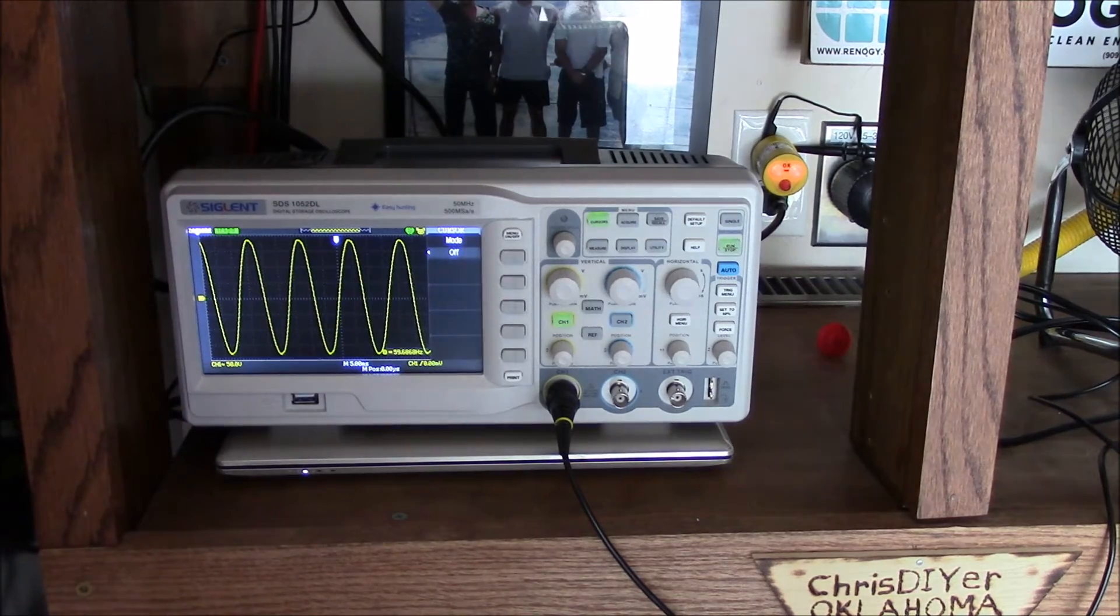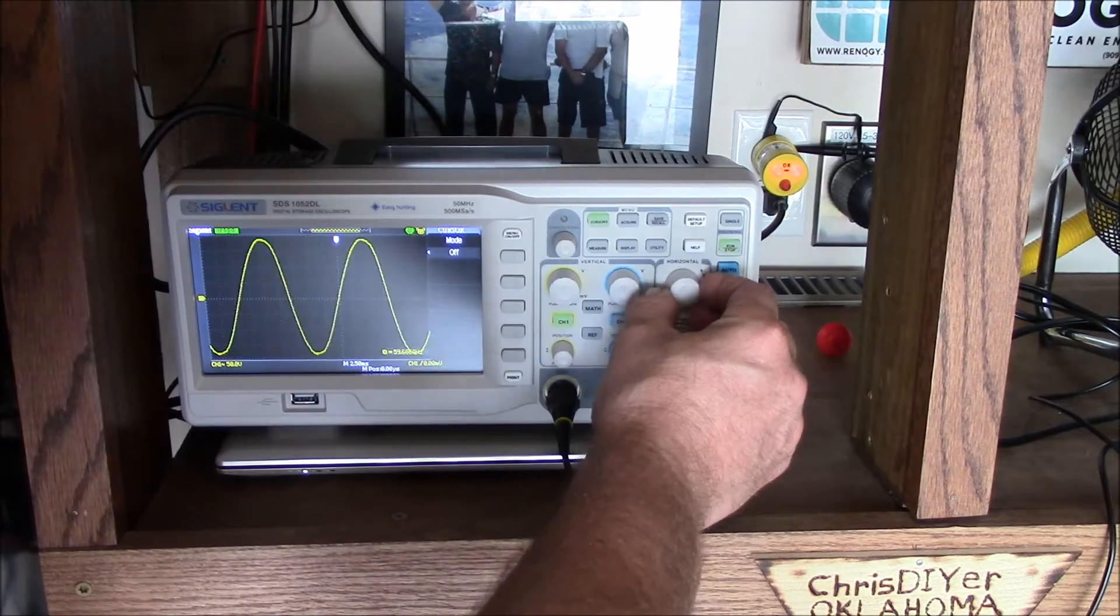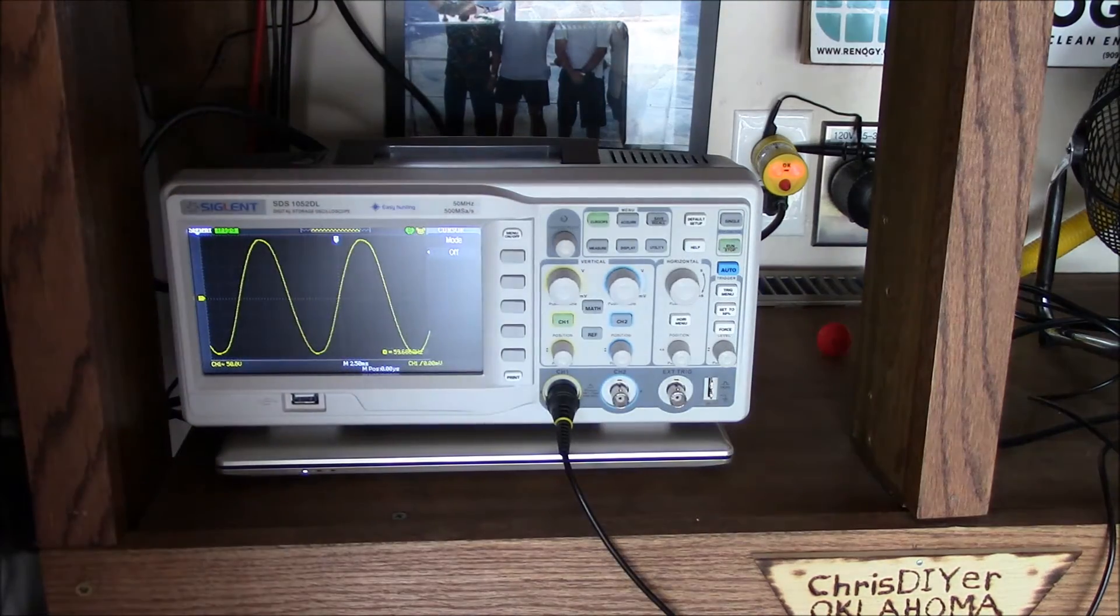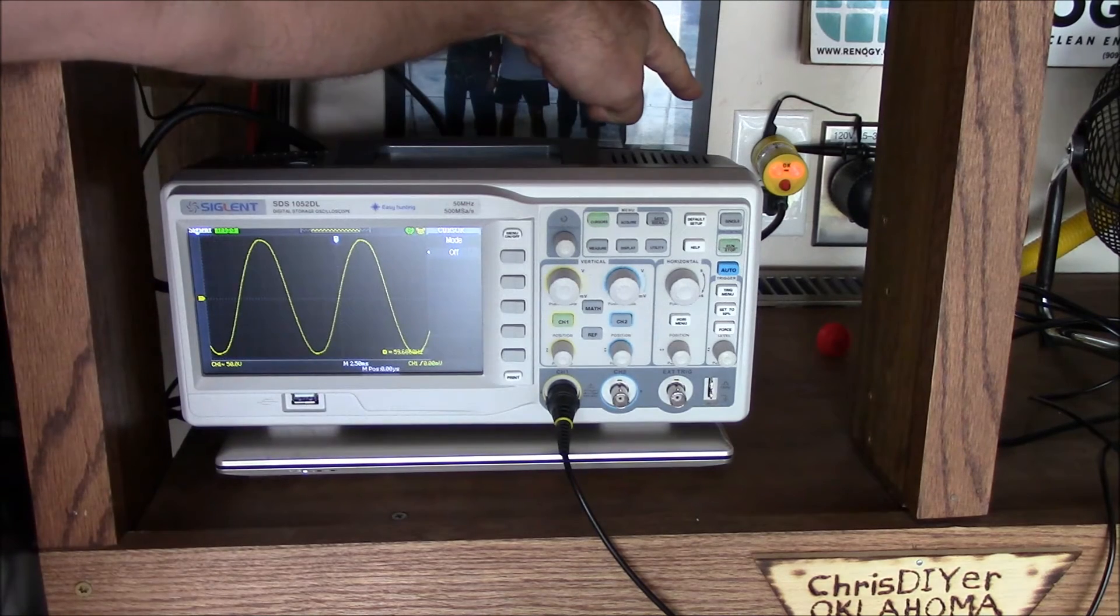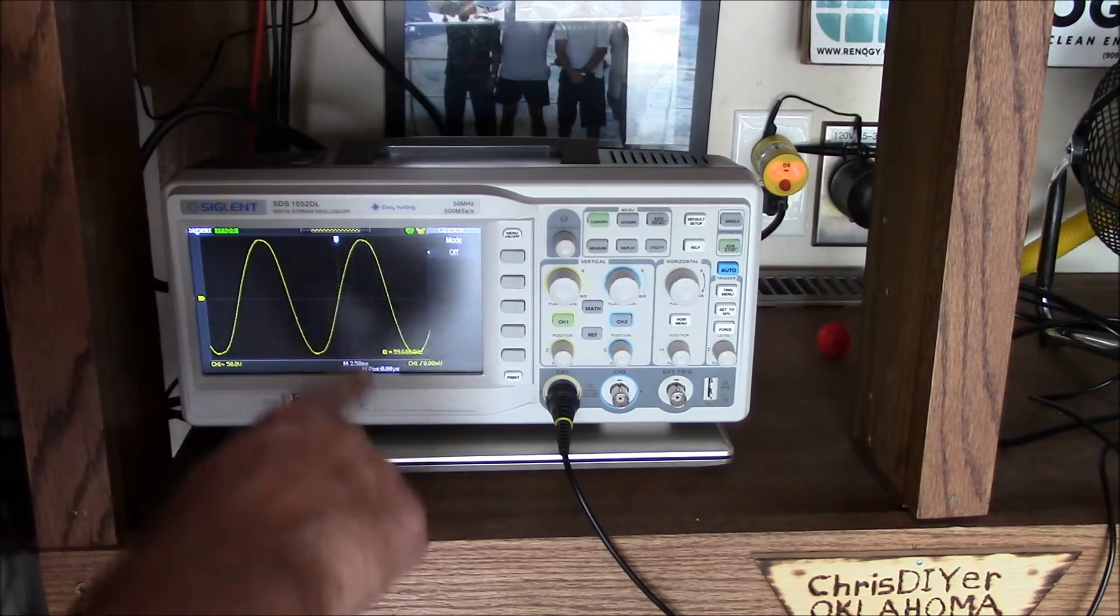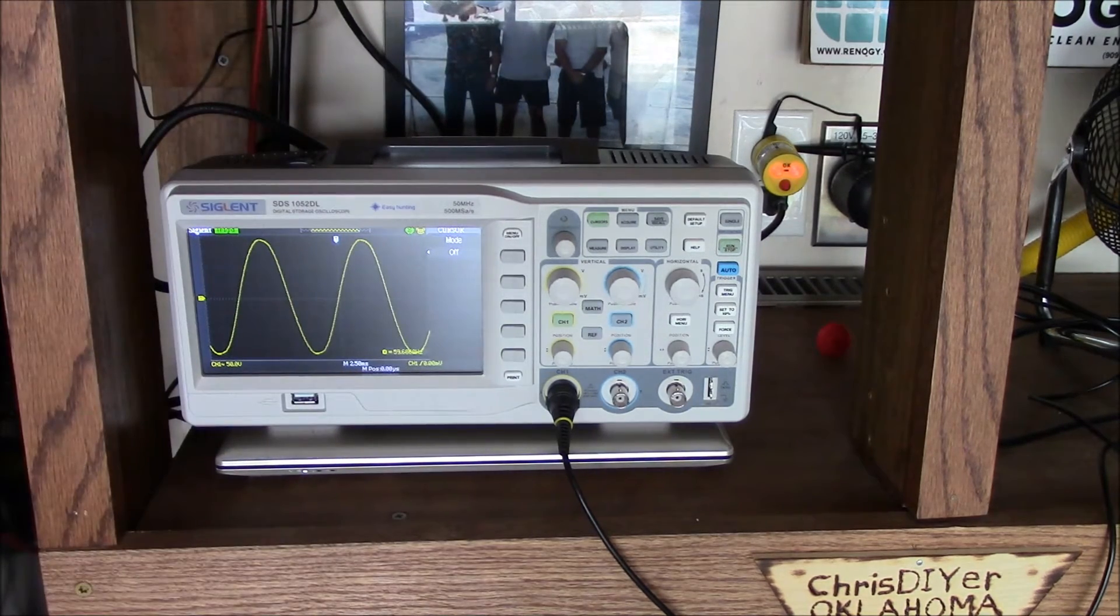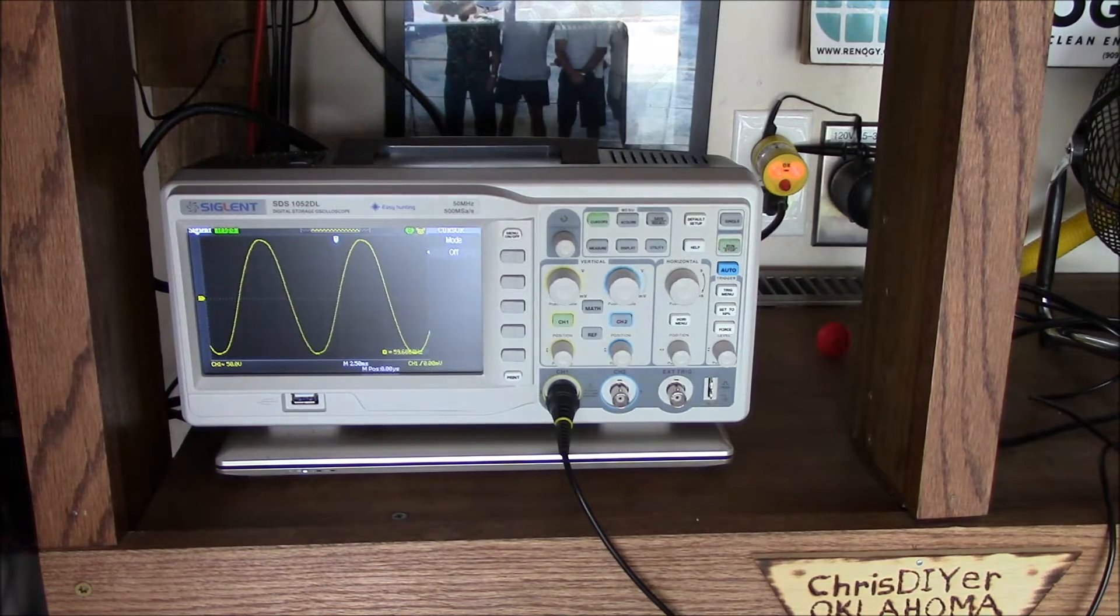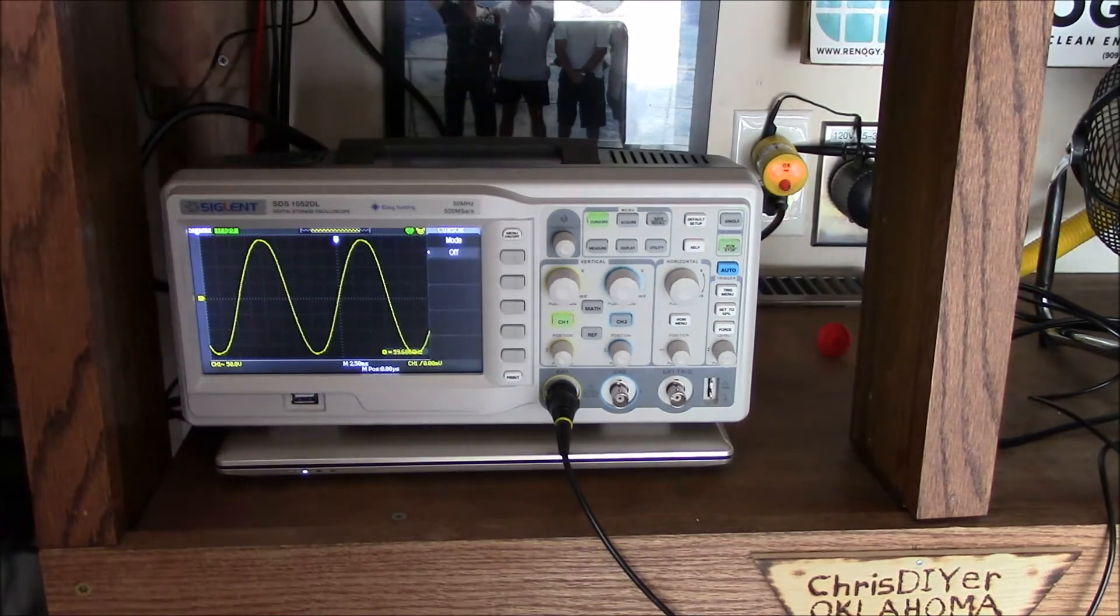That's what's coming out of the grid. This is grid power right here. Look at that. See how it's connected back into the wall outlet there? That's coming straight off the grid. Nice sine wave waveform, 60 Hertz. Actually 59.68 Hertz. Nice clean signal.